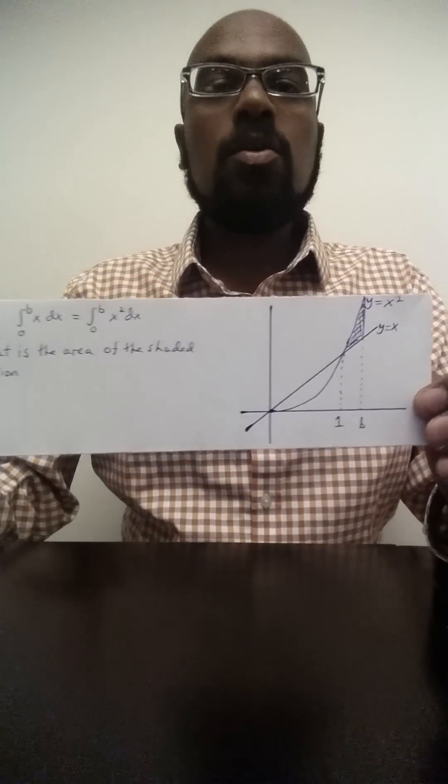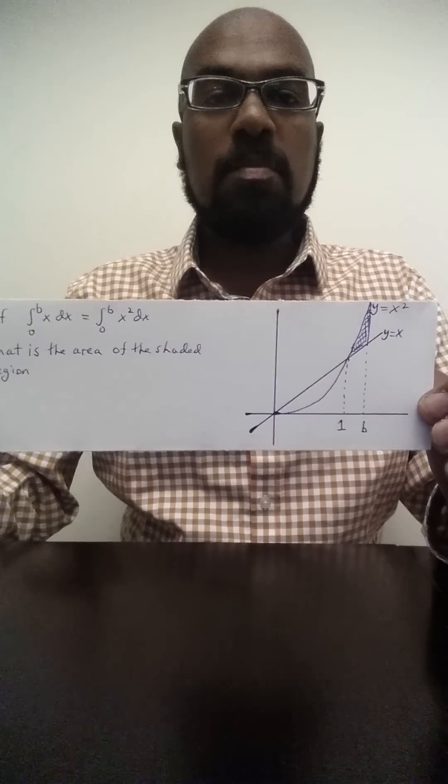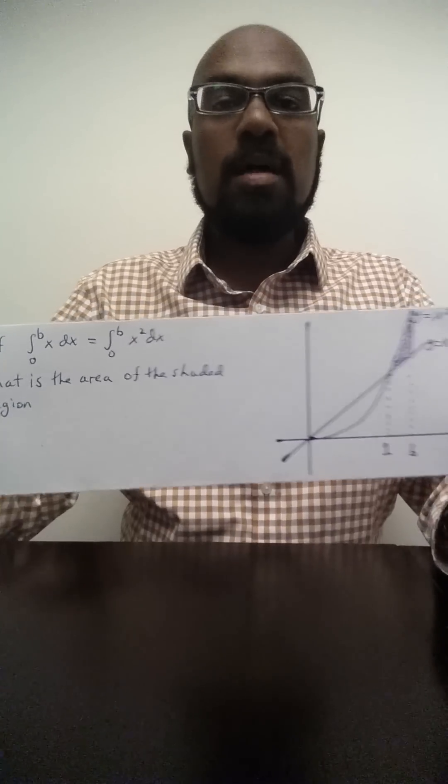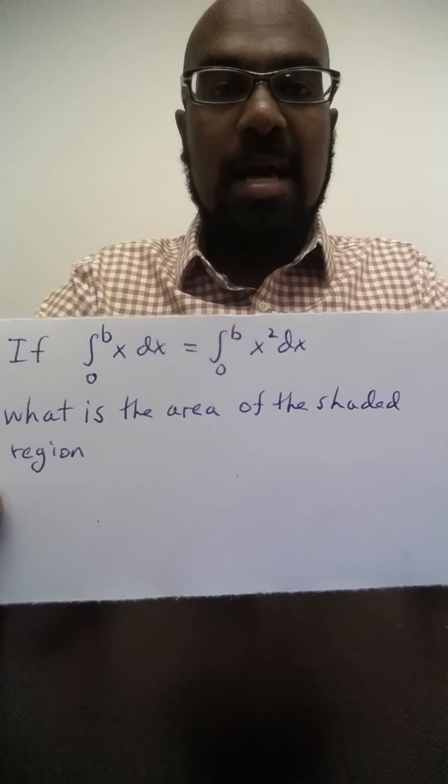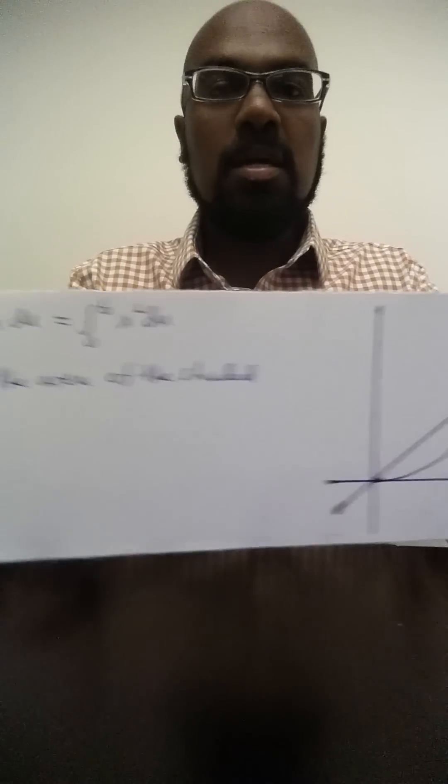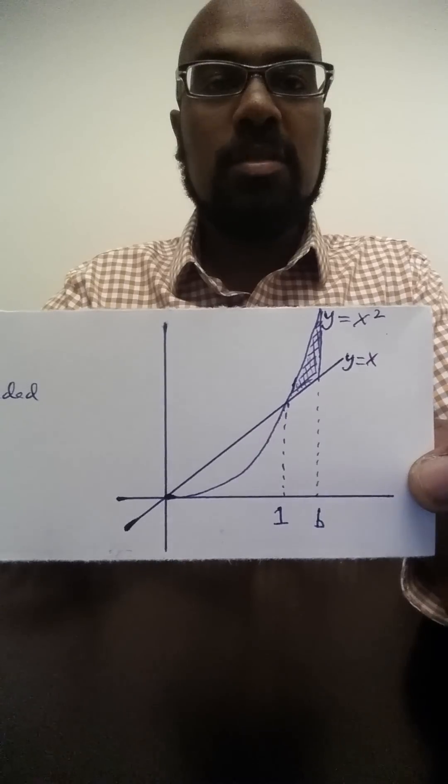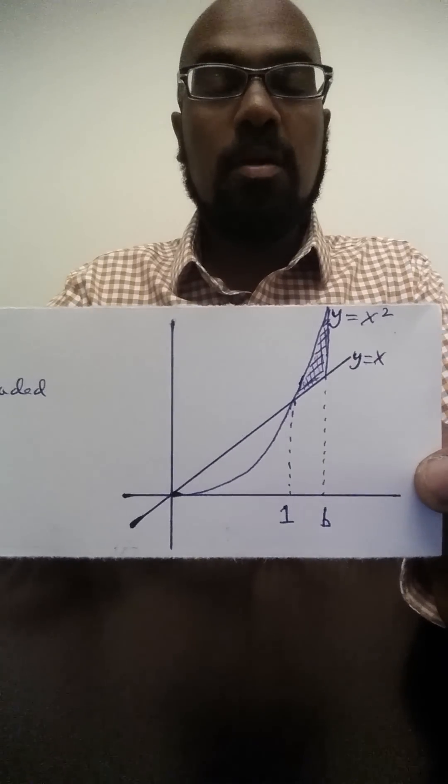But our goal here is to solve these problems in a quick manner in order to save us time on the GRE math subject test, and one way to do that is to interpret this as a statement of areas to be able to compute the shaded area without having to compute b at all.